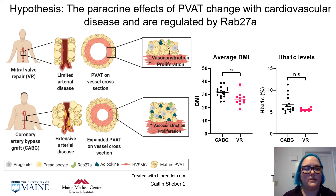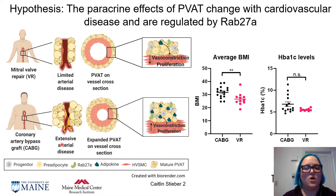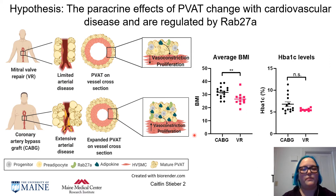To understand this in the case of cardiovascular disease, I'm using two donor populations: those undergoing mitral valve repair, or VR patients, and those undergoing coronary artery bypass graft, or CABG surgeries. For the VR patients, we expect there to be limited arterial disease, as these are usually congenital conditions being corrected, and thus we expect PVAT to have a healthy phenotype. However, in the CABG patients, we generally see more extensive arterial disease, as you can see here, and I expect this unhealthy PVAT phenotype.